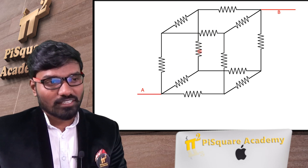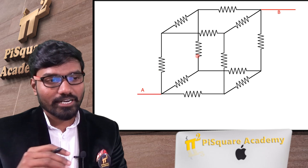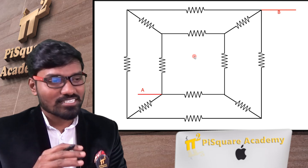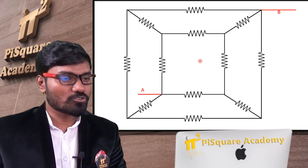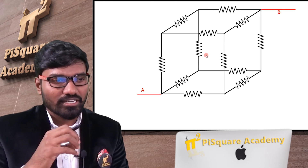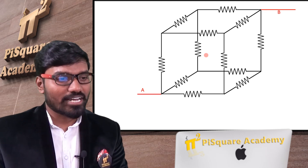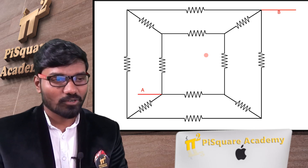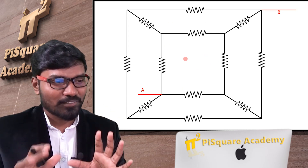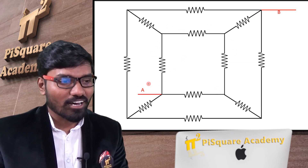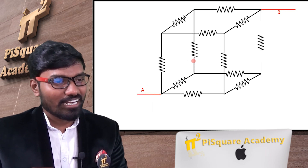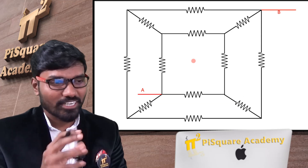Let's see how to solve this question. For easy understanding, let me redraw this diagram. So after I redraw this, this is what the structure looks like. This is the cube — I am not changing the connection, I am just changing the view, just redrawing the diagram like this. Both are same. This will be a little easier for you to analyze because now everything is in the front face.